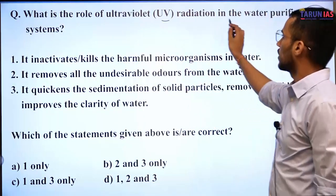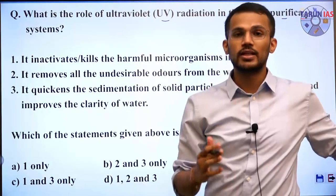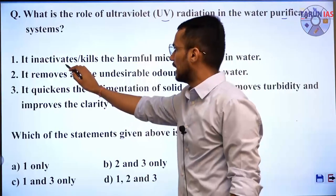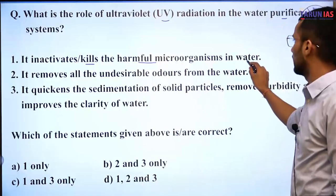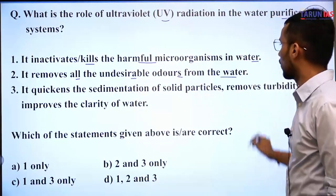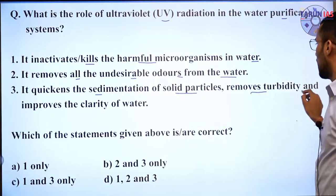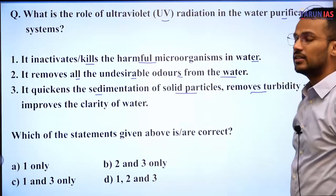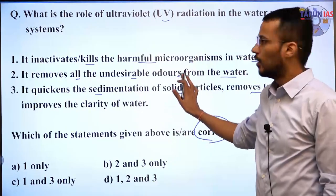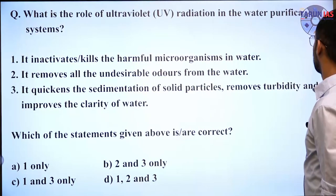The next question: what is the role of ultraviolet radiations in water purification systems? Statement one: it inactivates or kills harmful microorganisms present in water. Statement two: it removes all undesirable odours from water. Statement three: it quickens the sedimentation of solid particles, removes turbidity, and improves clarity of water. UV radiations are part of the electromagnetic spectrum with higher energy than visible and infrared light but lower than X-rays and gamma rays.